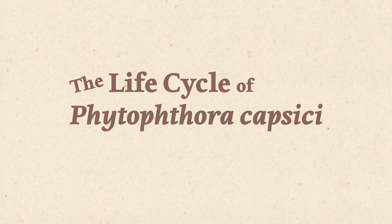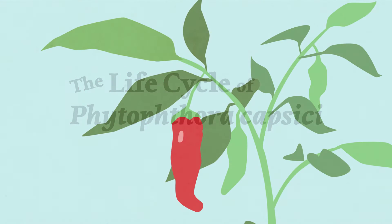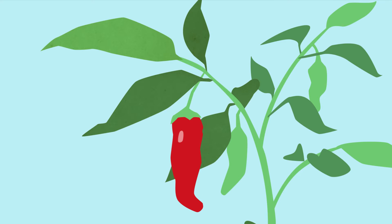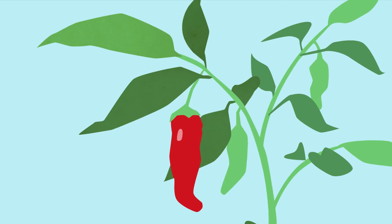Phytophthora capsaezi is a fungus-like pathogen that causes severe damage among numerous vegetable crops, including peppers, beans, melons, squash, and tomatoes.